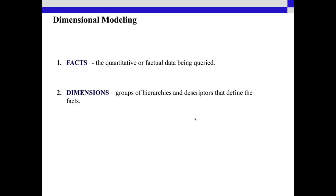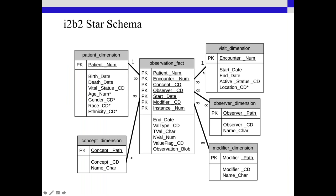You have the facts which define the data, and then you have the dimensional tables like the patient dimension and the concept dimension, which is the metadata. The I2B2 star schema contains six main tables. You have the observation facts, which has the patient number, the encounter number, the concept, the observer (which is like the provider ID), the date, the modifier, and the instance number.